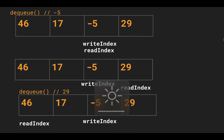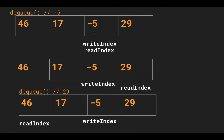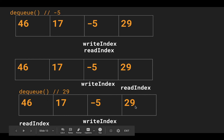Now we start dequeuing elements. The dequeue operation pulls the element that read index is pointing to — it's pointing at negative 5, so we return negative 5 and advance the pointer to the next element, which is 29. If we dequeue again, we return 29 and advance read index. Since it goes past the array size, it circles back and read index is placed at the first element.